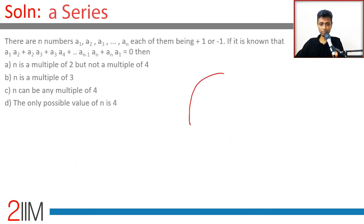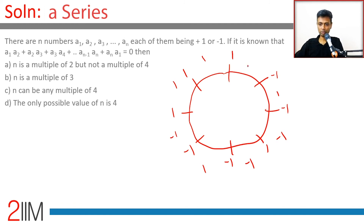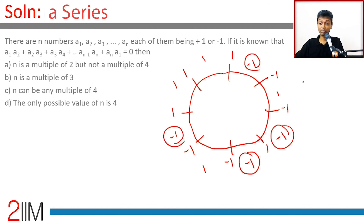Let's see if n=8 is possible. Trying: 1, -1, -1, 1, -1, -1, 1, 1. The products are: 1, -1, 1, -1, -1, 1, -1, so counting: four minus-ones and four plus-ones, giving -4 + 4 = 0. It is indeed possible for n=8! So n=8 works. With n=6 it is not possible, with n=8 it is possible.